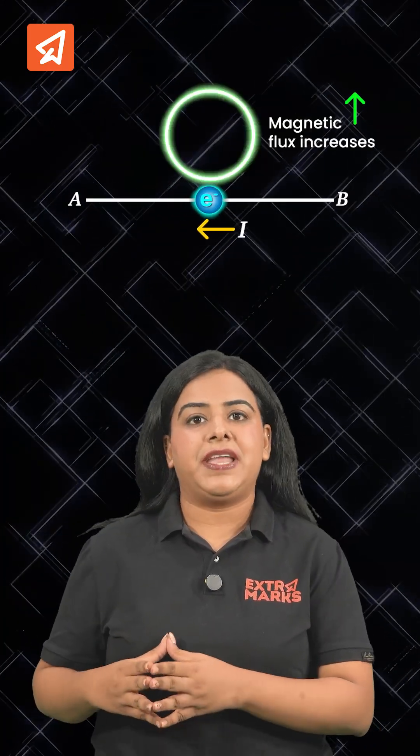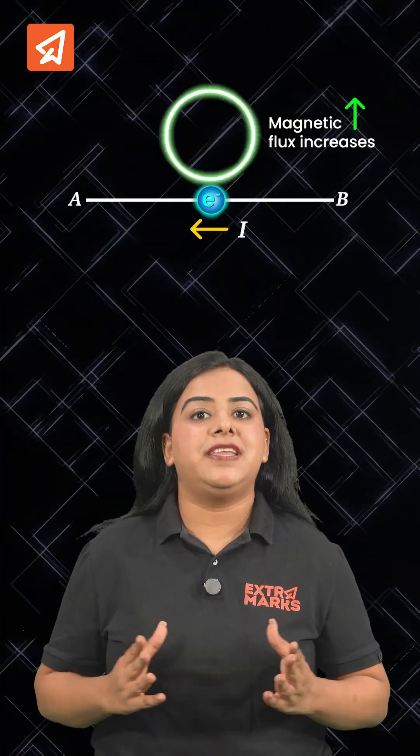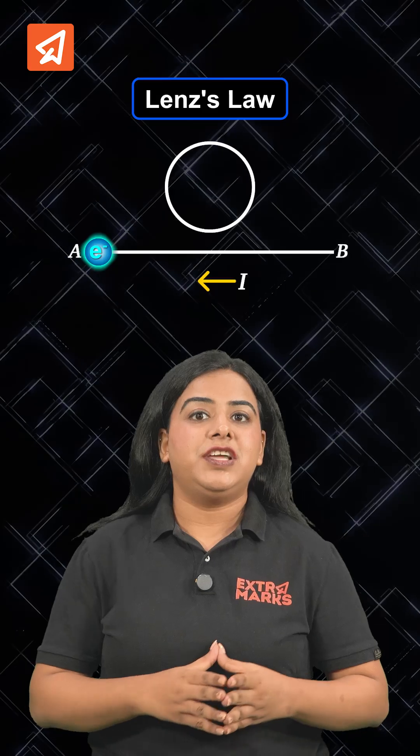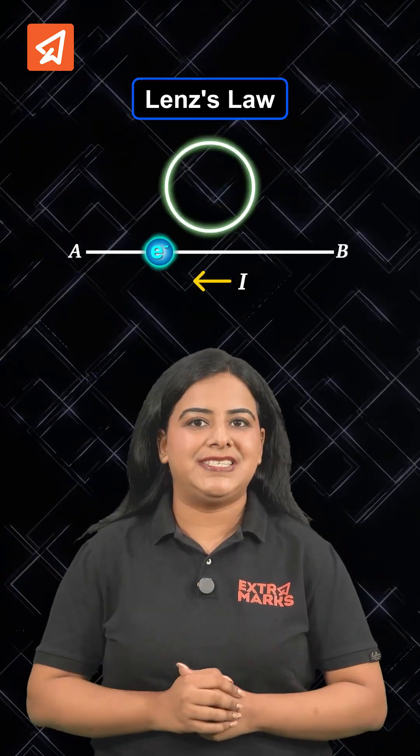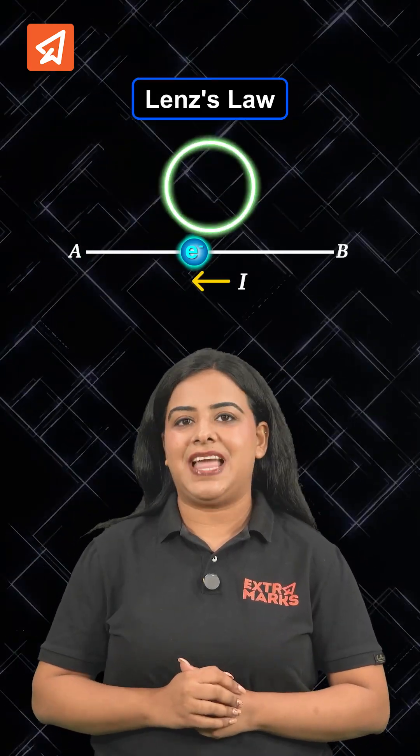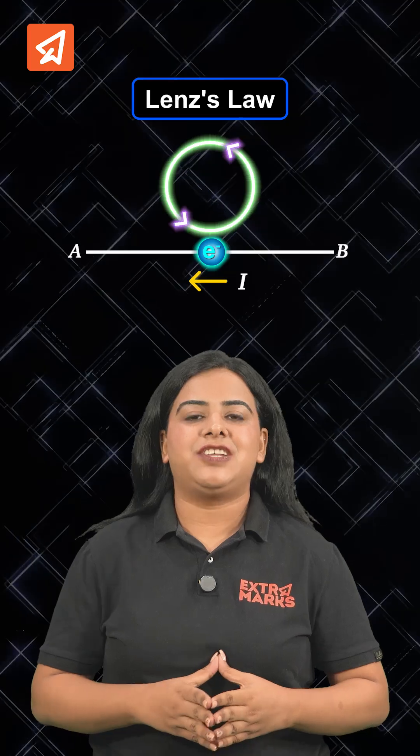When the electron moves towards the loop, the magnetic flux increases. And by Lenz's Law, the loop induces a current in a direction that opposes the change in magnetic flux — that is, anti-clockwise current.